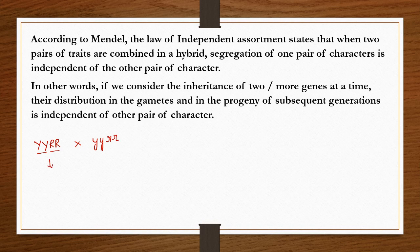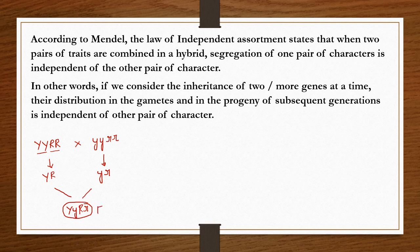During fertilization these two gametes fuse together to form the F1 generation: capital Y, small y, capital R, small r. Since capitals are dominant, all F1 individuals are yellow round.